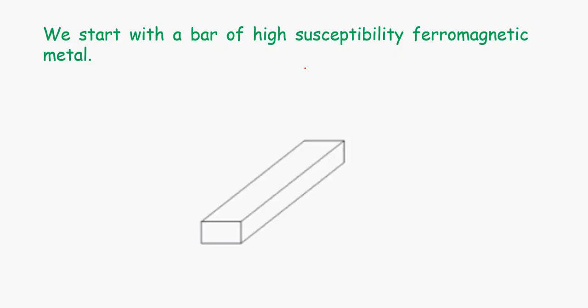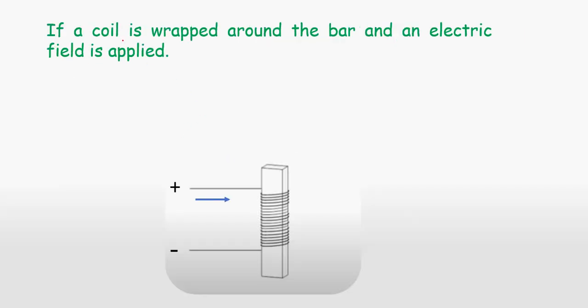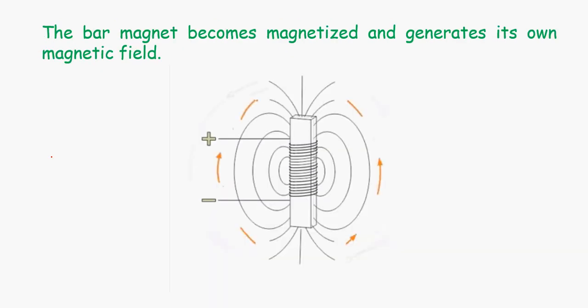Usually it's made up of a bar of high susceptibility in terms of ferromagnetism. We shall wrap a coil around this bar and supply it with electric field so that we can induce a certain magnetic field around this coil. Whenever you have electric current, there is some magnetic field that is generated. The bar magnet becomes magnetized and generates its own magnetic field.